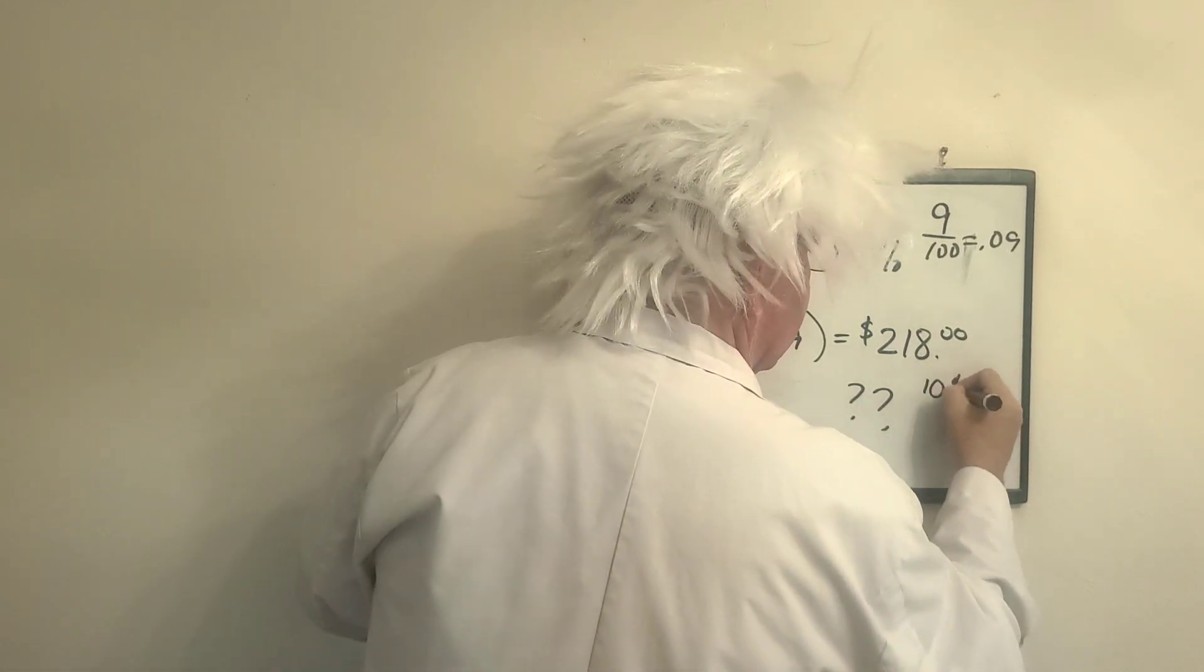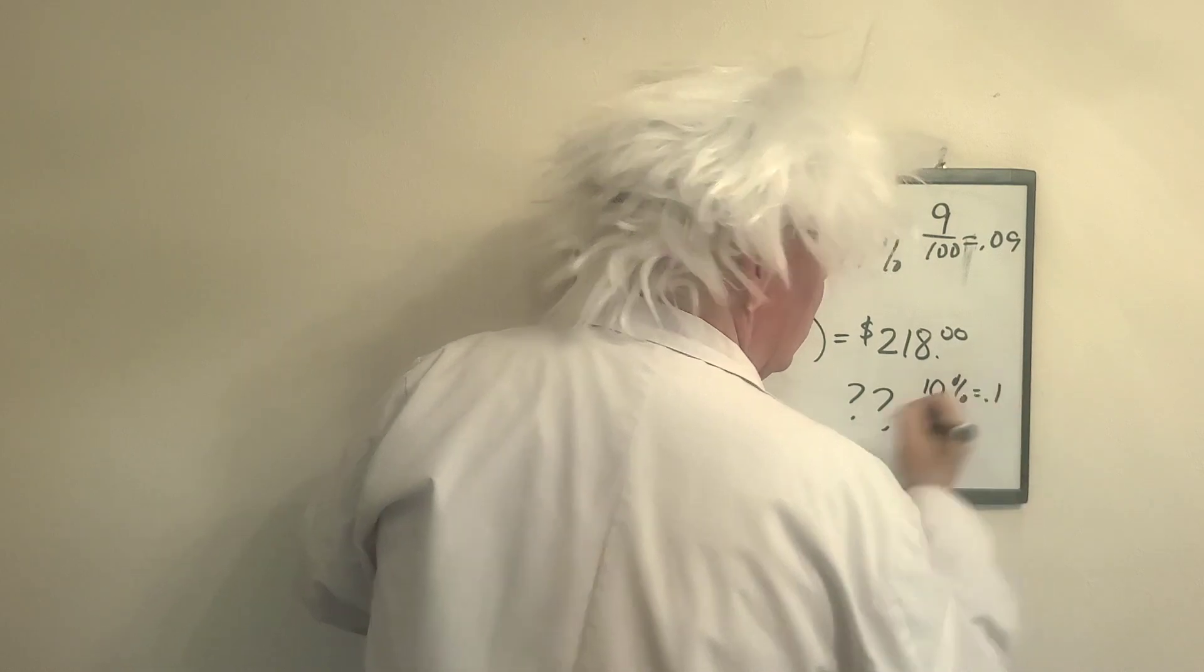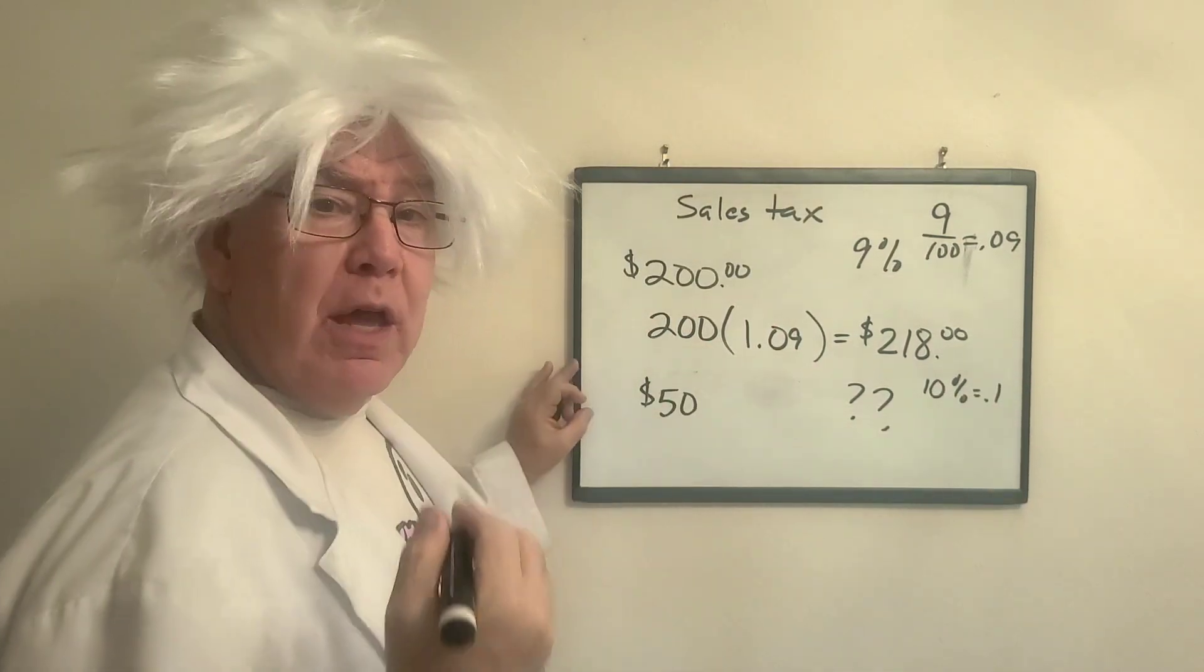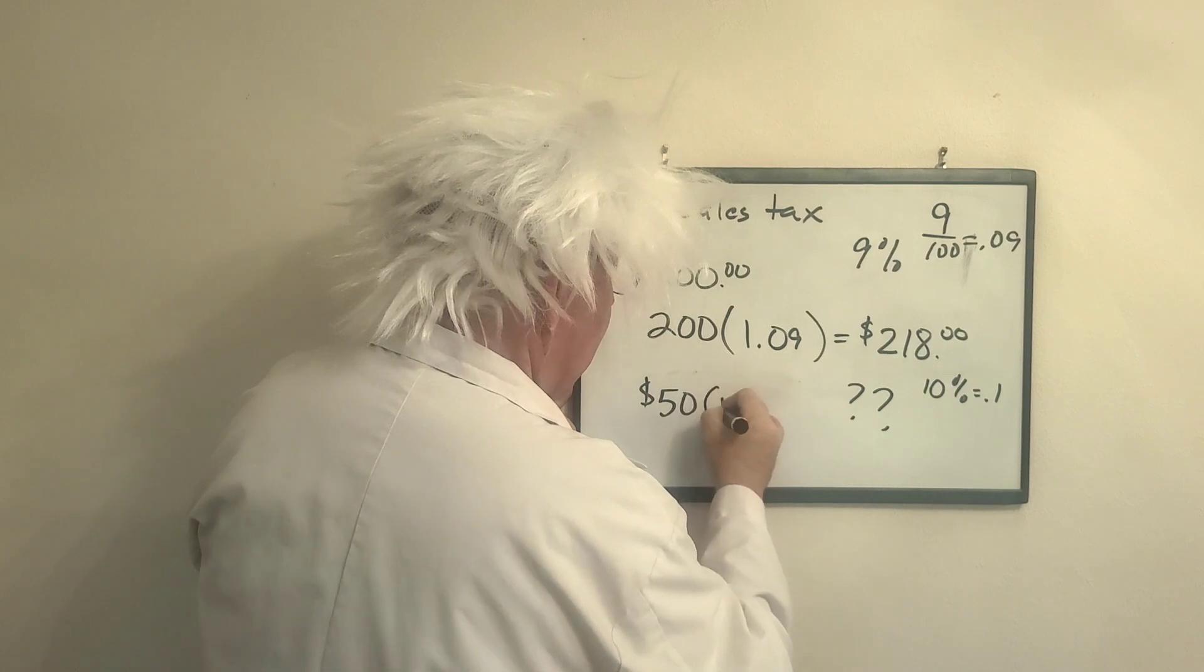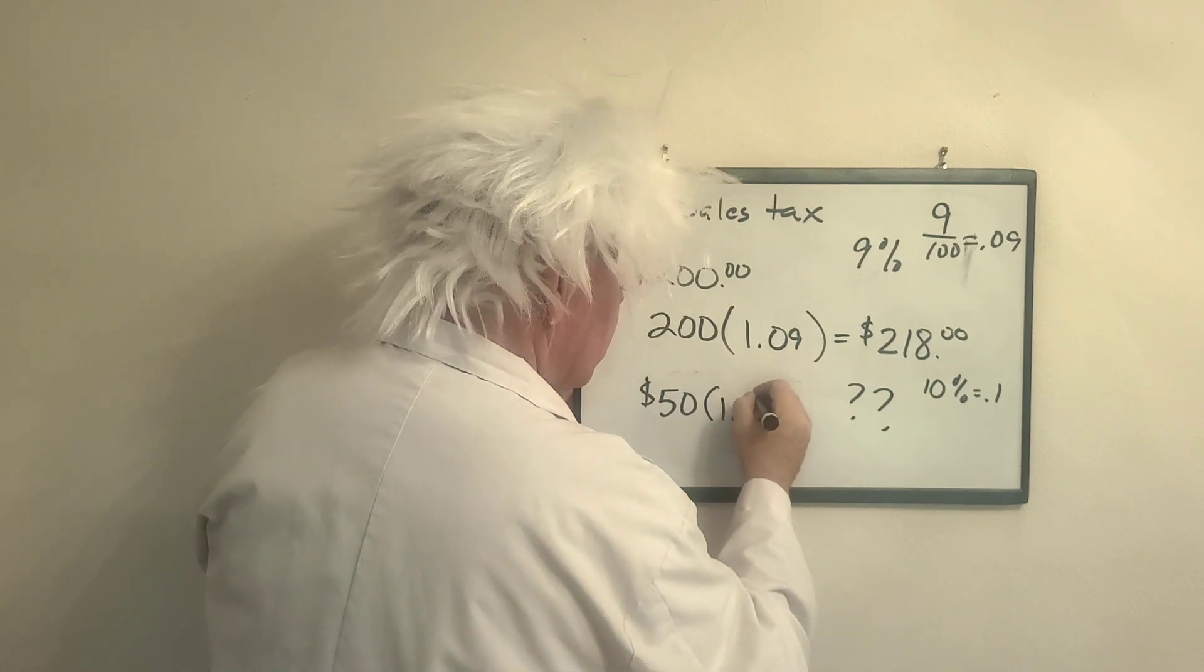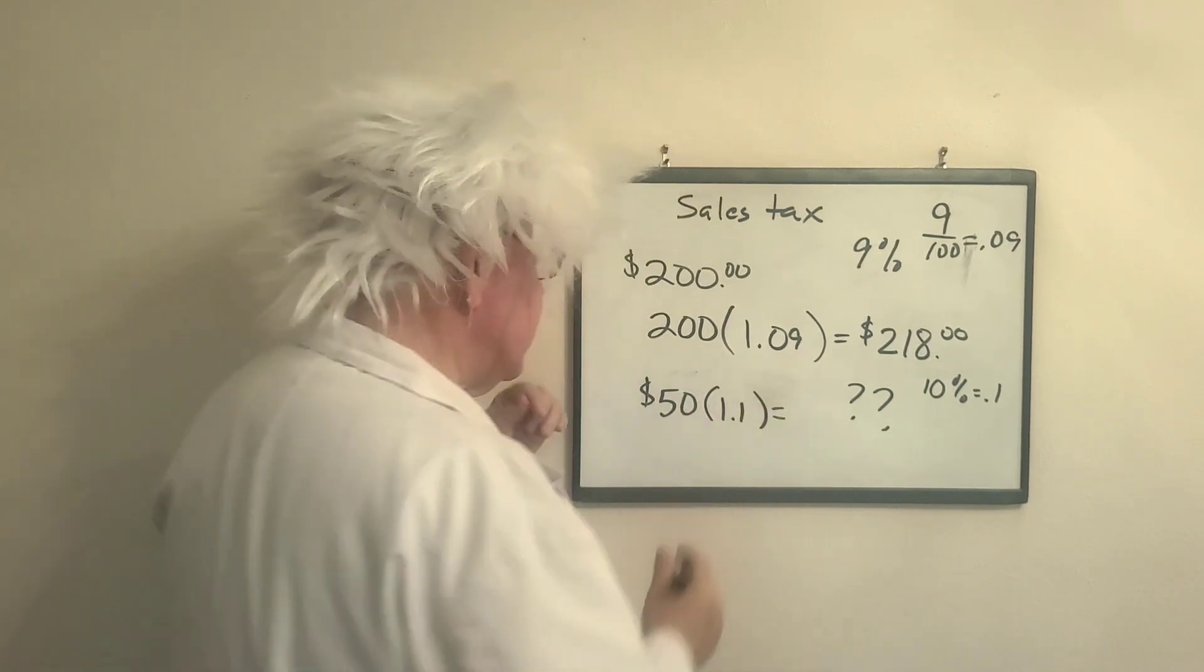10% equals 0.1 because when you divide it by 100. So here's what I do. I'm going to say, okay, I'm going to take my 1 plus 0.1. I multiply that together.